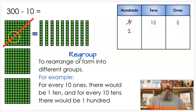Same thing here. If I take away that hundred, I'm not taking it away, I'm just trading it out. I'm regrouping. I'm turning it into 10 tens. So again I still have 300 here.